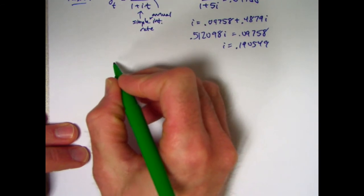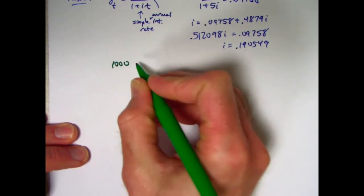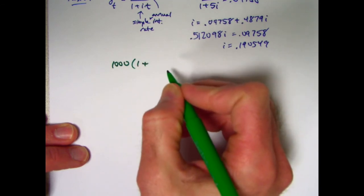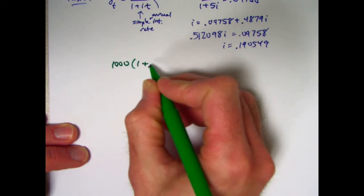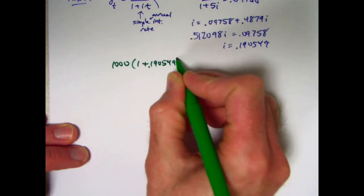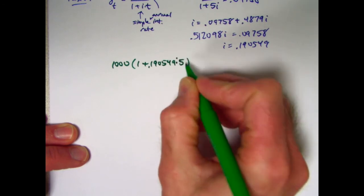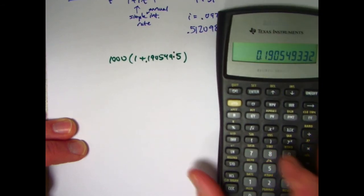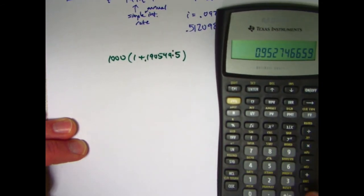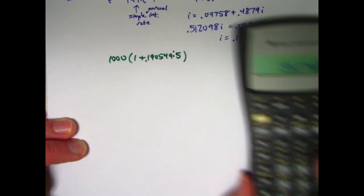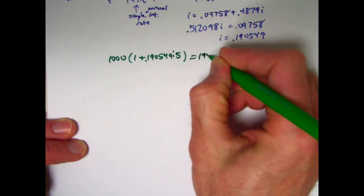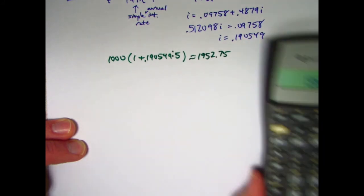Fabio deposits 1,000. At simple interest, that means you need to multiply 1,000 by 1 plus I times T. I, we've just found to be 0.190549, times T. T is going to be 5 years. Ignore this dot there, that's a mistake. So multiply this thing by 5, add 1 to it, and multiply it by 1,000. Giving an answer of about 1952.75.